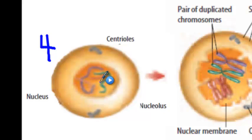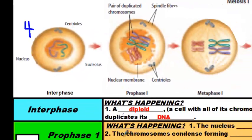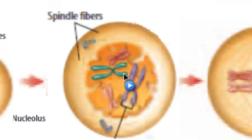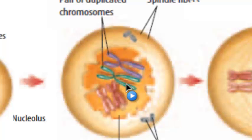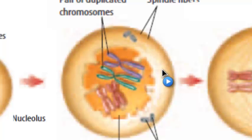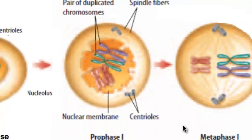Once the cell grows and replicates its DNA and forms its chromatid pairs, prophase I begins. The nucleus disappears and the chromosomes condense forming their chromatids. What makes this different from mitosis is that the chromatids are going to line up with their homologous pairs. Then the centrioles move to the poles of the cell and start to form spindle fibers.